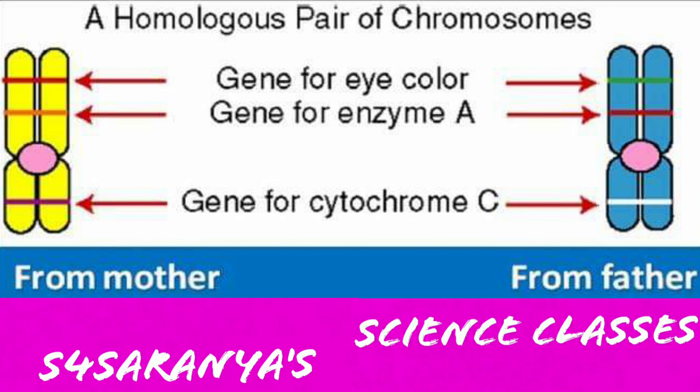Before going into detail, let us understand what we mean by homologous chromosomes. Chromosomes with similar genes form a homologous pair. We get one set of chromosomes from the mother and one from the father; together they form the homologous pair. In the picture you can see chromosomes from the mother and from the father — both carry the same type of genes, for example the gene for eye color and the gene for an enzyme — confirming this is a homologous pair.